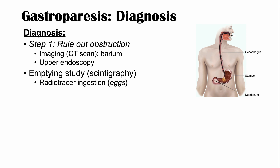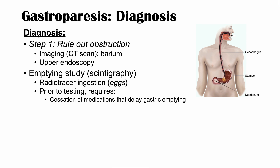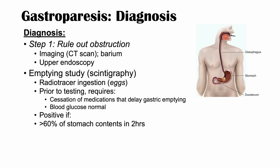In scintigraphy, the individual ingests a radiotracer — usually in the form of eggs. Prior to ingesting it, they must stop taking medications that delay gastric emptying and maintain good blood glucose control. After ingesting the radiotracer, we wait two to four hours. A positive result is greater than 60% of stomach contents remaining after two hours, or greater than 10% remaining after four hours.